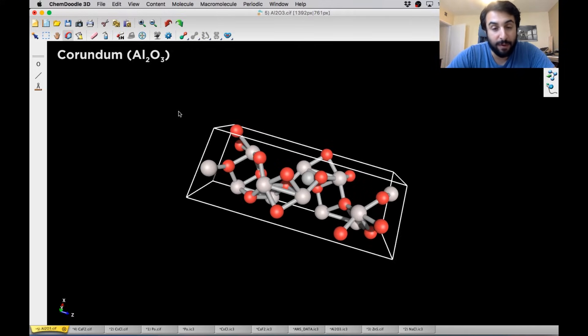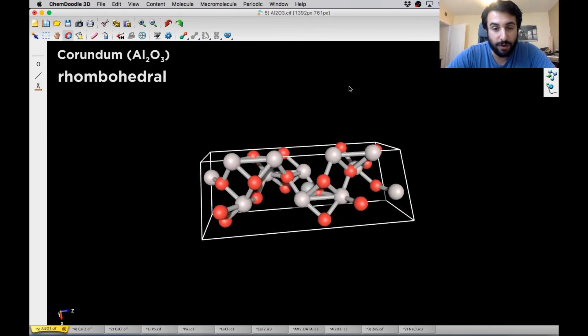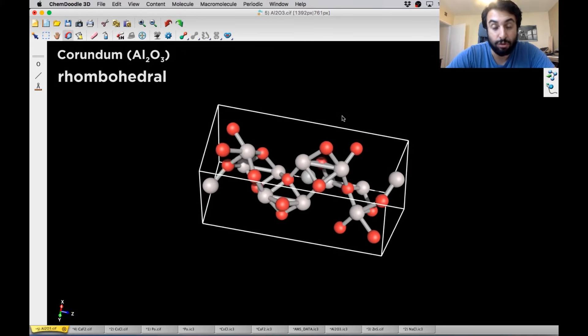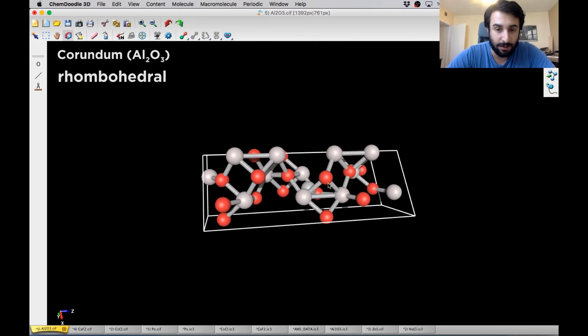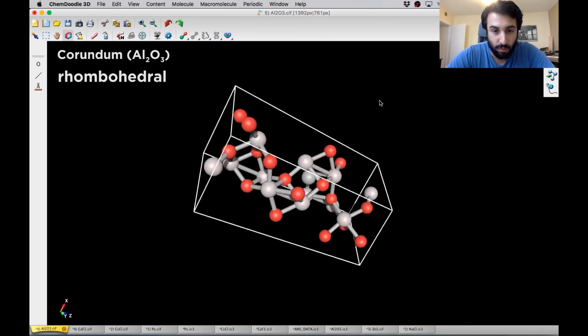So here we have a form of aluminum oxide called corundum. So this is Al2O3. So it's even more complex in terms of the ratio between the cation and anion. So we've got Al3 plus in gray and then O2 minus in red. And this is going to form a rhombohedral structure. So they're not all cubic. And there's actually many of these. So we won't go through all of them. But I wanted to show you one weird one.